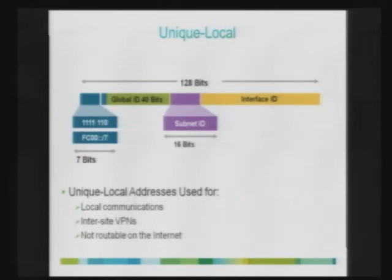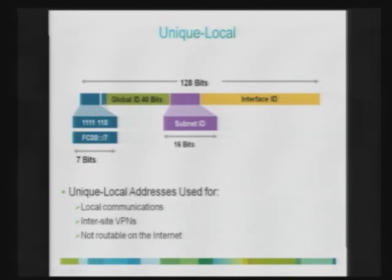For unique local addresses, the first seven bits are constant — representing it as a unique local address that can never be routed on the Internet. The eighth bit is currently set as 1, making it FD00::/8. Organizations are free to use the global ID portion for doing prefix allocation within their network.